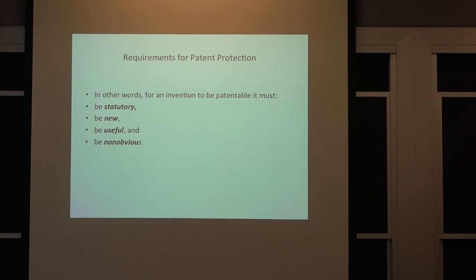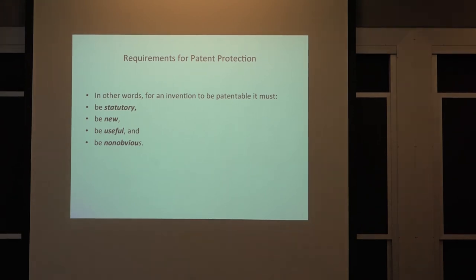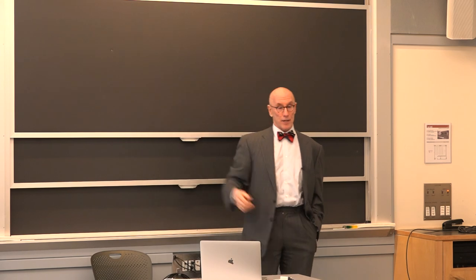First, the invention — the thing you want to patent — must be statutory. What does statutory mean? It must be included as an invention as defined under Title 35 of the United States Code, the statute enacted by Congress which enables patents to be issued. The first requirement is it must comply with that statute.